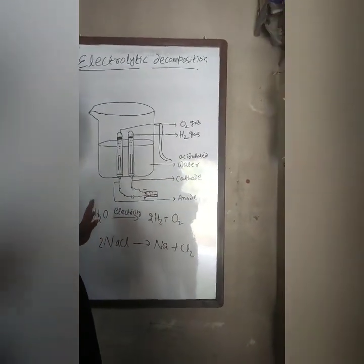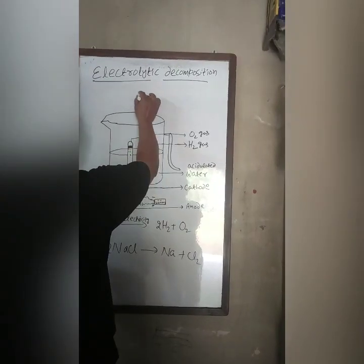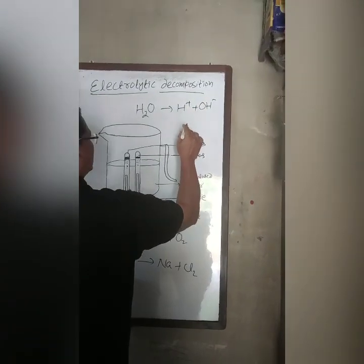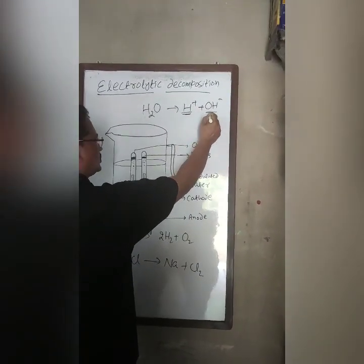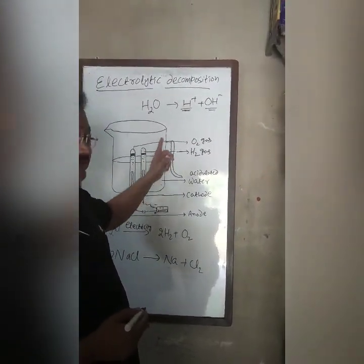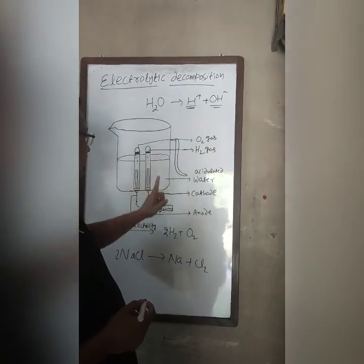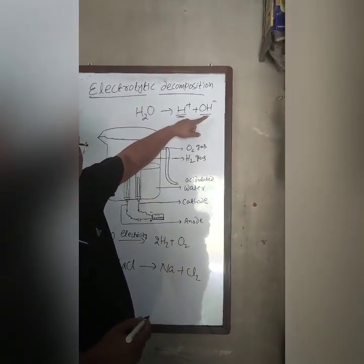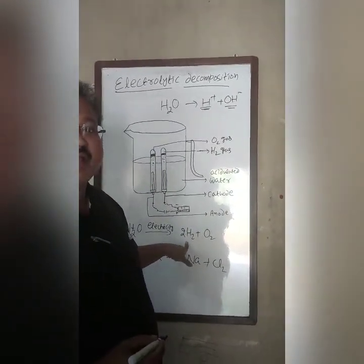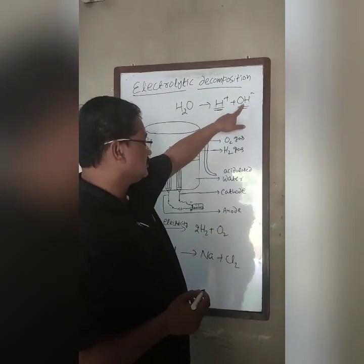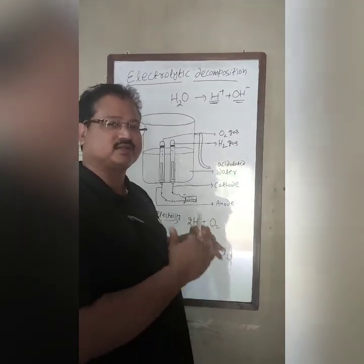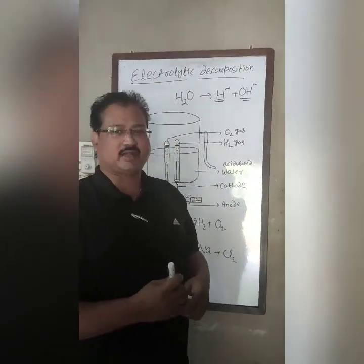Similarly, water decomposes into H⁺ and OH⁻ ions. H⁺ is the cation and OH⁻ is the anion. Cations travel towards the cathode because they are positively charged, and OH⁻ ions travel towards the anode. H⁺ gets converted to hydrogen by accepting electrons, and OH⁻ gets converted to oxygen and water. The detailed ionic equation is beyond the scope of this activity.